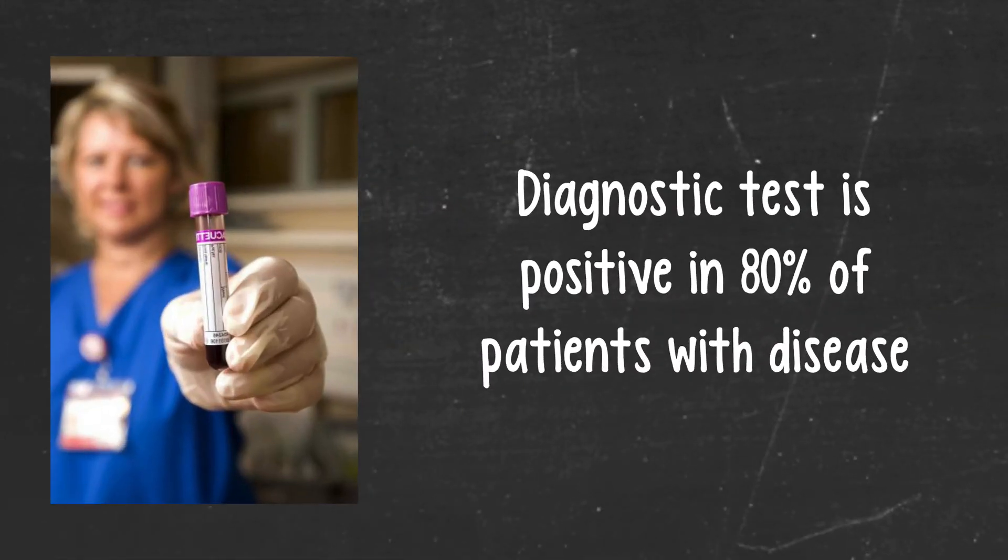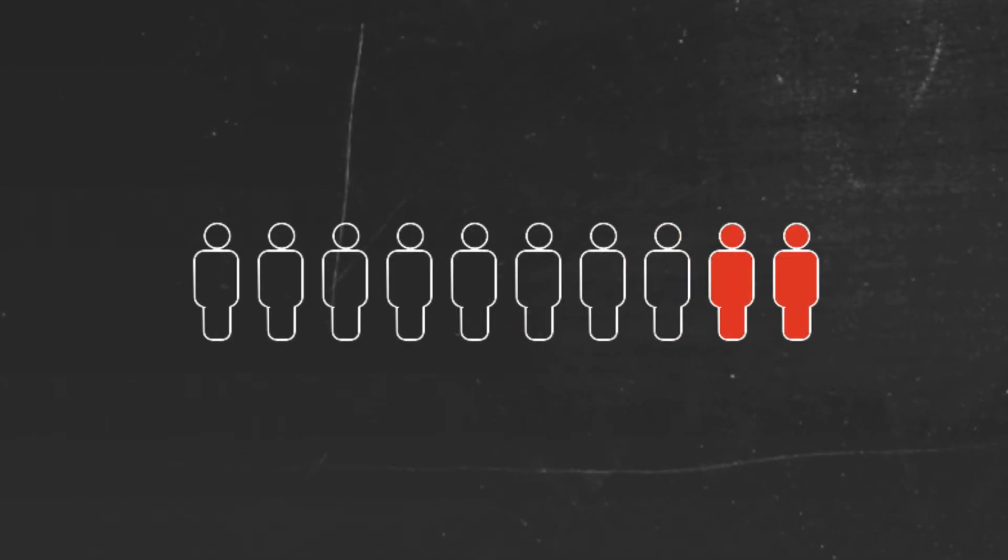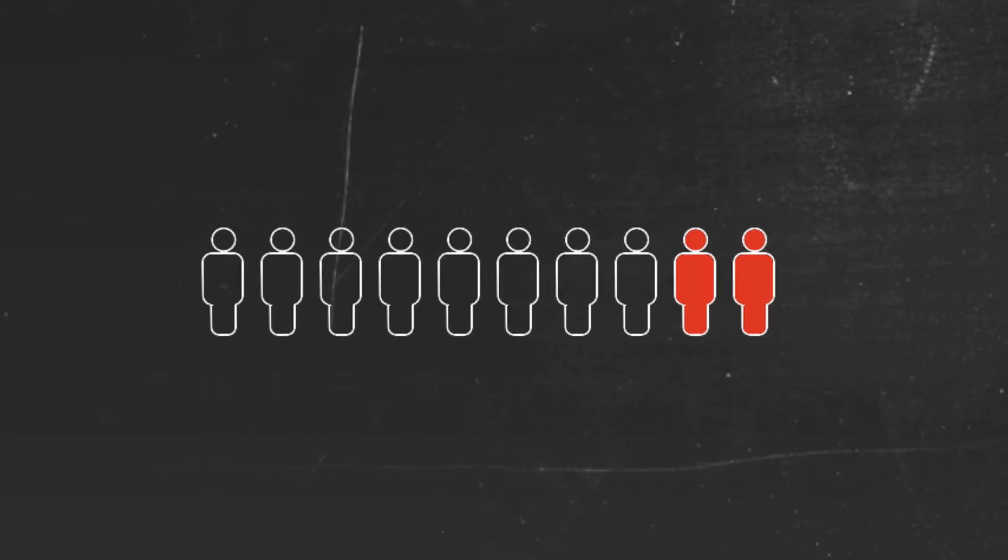And let's also assume that the diagnostic test he's going to give you to screen you for the disease is about 80% accurate in patients who have the disease. In other words, the test will be positive and therefore correct in 8 out of 10 patients who actually have the disease and negative and therefore wrong in about 2 out of 10 of them. Sounds pretty good, right? It correctly predicts the presence of the disease in the great majority of sufferers and only gets it wrong in about 2 out of every 10 of them.